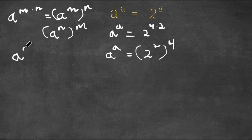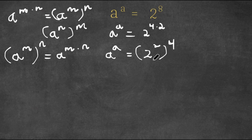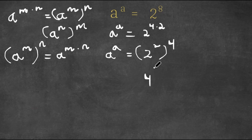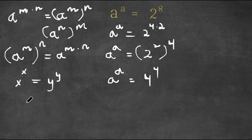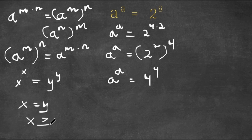Now, if we have a to the power of m to the power of n, this equals a to the power of m times n. However, I'm simply going to evaluate what's in the parentheses: 2 squared equals 4. So now I have 4 to the power of 4 is equal to a to the power of a. If we have x to the power of x equals y to the power of y, then x equals y, as long as x is greater than or equal to 1. So in this case, a is equal to 4.